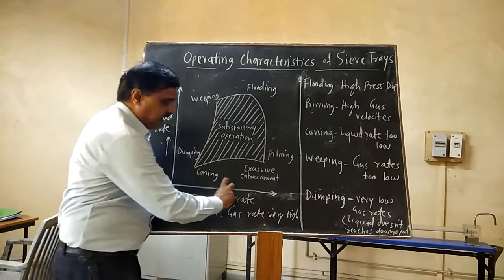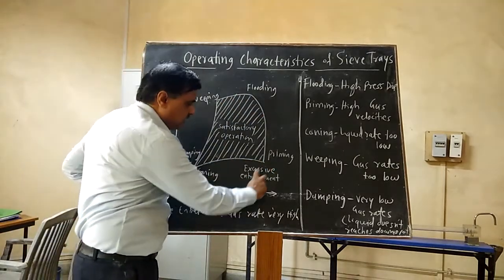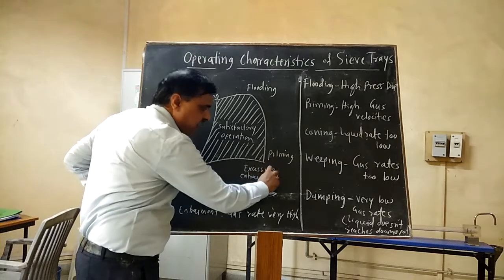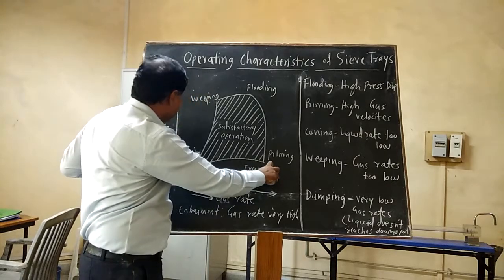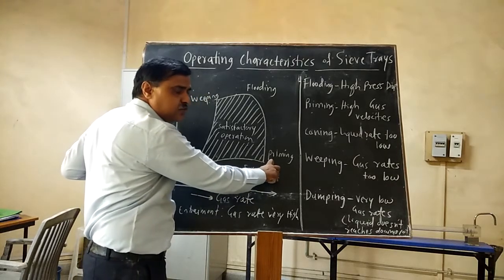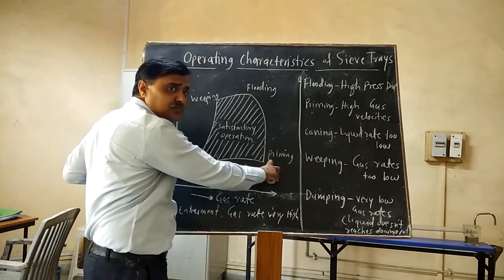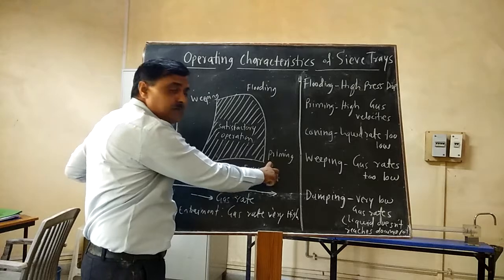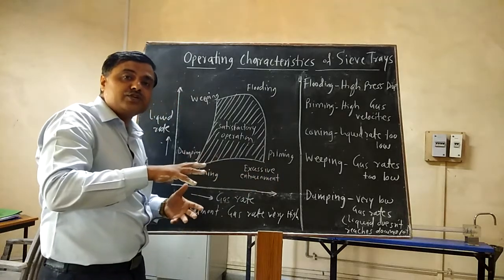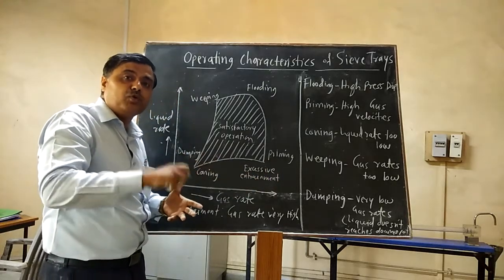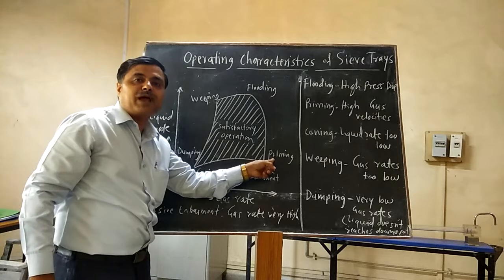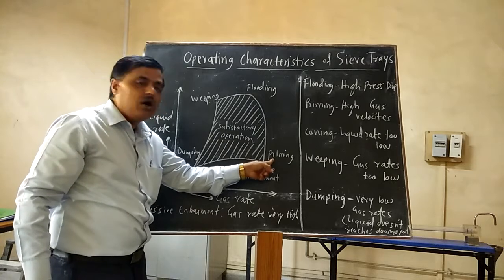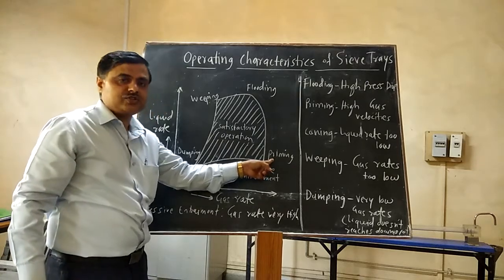Next is priming. On the x-axis, the gas rate is very high at the condition of priming and the liquid rate is very low. Because of this, the contact of gas and liquid is very poor, and the condition of priming occurs.